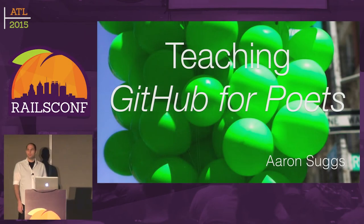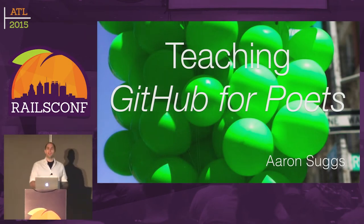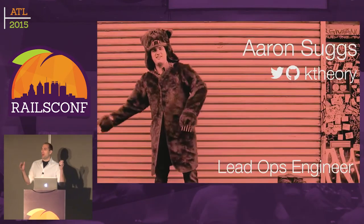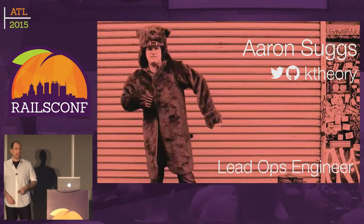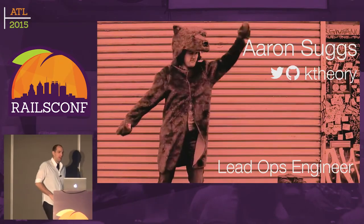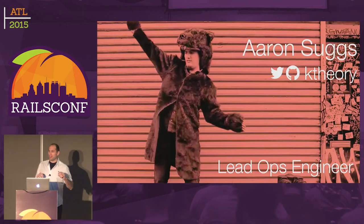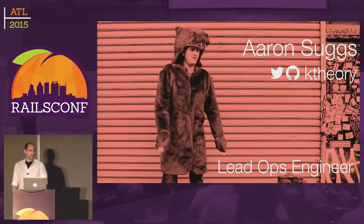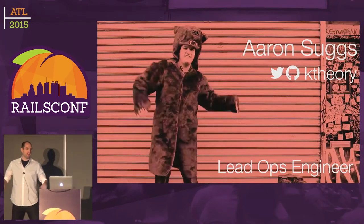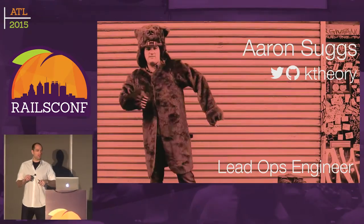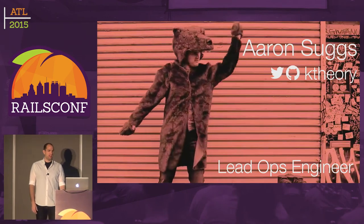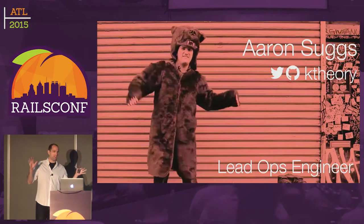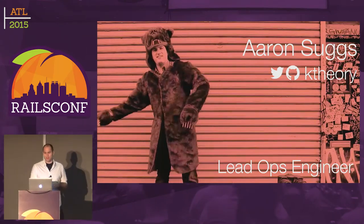I think we can go ahead and get started. You guys are in teaching GitHub for Poets. I am Aaron Suggs. I go by K-Theory on social media. I'm the lead operations engineer at Kickstarter and I'm a terrible dancer. This is me dancing horribly in a grizzly bear suit called the Grizz Coat — it was a Kickstarter reward. I'm always a little nervous starting out these talks, but once you've seen me dancing poorly in a grizzly bear suit, there's nowhere to go but up.